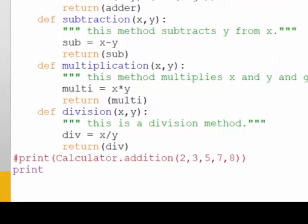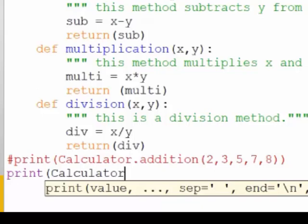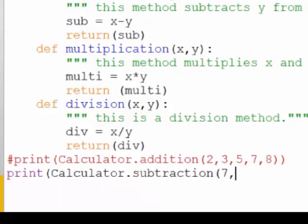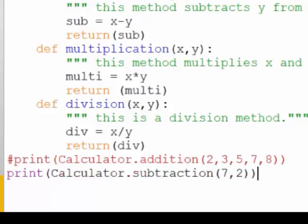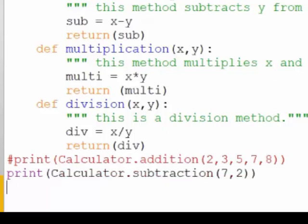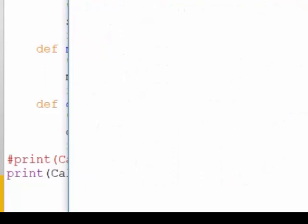To avoid confusion you can comment out the lines that you don't want to be shown. So you write down print calculator dot subtraction and enter two values. The subtraction of two from seven is five.